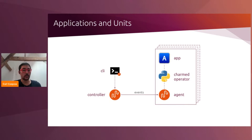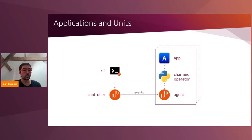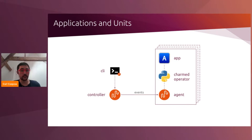Within that unit, you have the application itself — for example, for MySQL, that would be the MySQL binary. You have Python code that is operating the application, called the charm operator, or charm for short. And finally, also within the unit, is the Juju agent. The Juju controller continually monitors the current state of applications and their desired state, and based on that, sends events to the Juju agent within each unit. When the Juju agent receives an event, it executes the charm code and passes along information about that event.